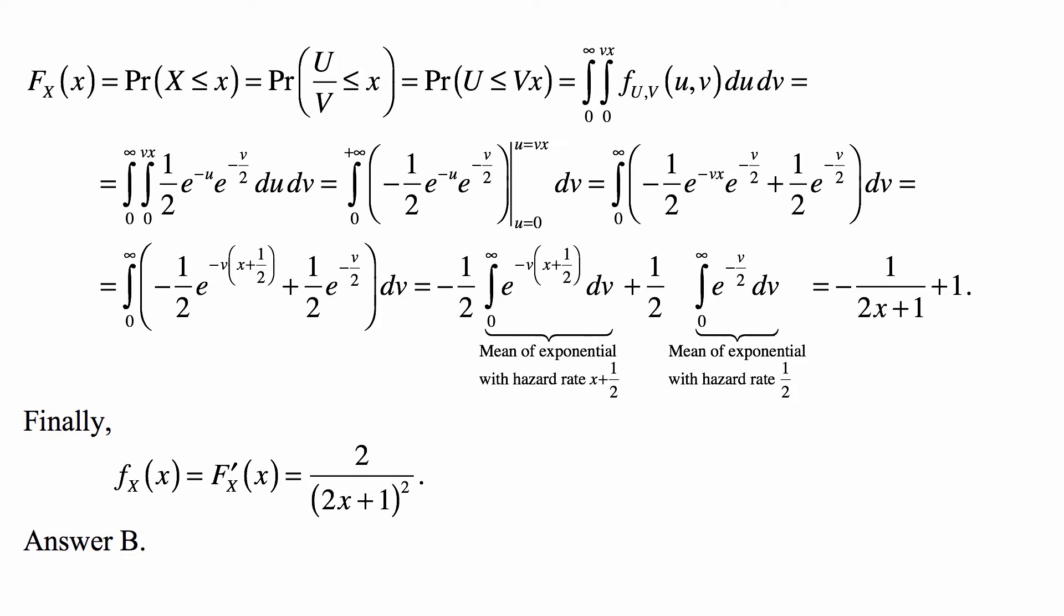We factor the exponent, factoring out v in the exponent of -v, and we have -(1/2)e^{-v(x+1/2)} + (1/2)e^{-v/2}. We split this into two integrals: the integral from 0 to infinity of e^{-v(x+1/2)} dv.